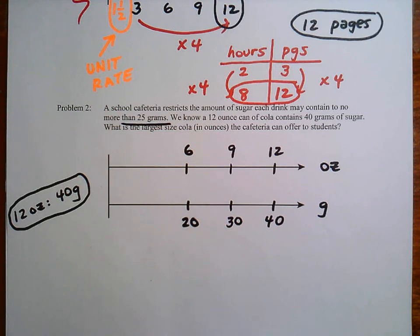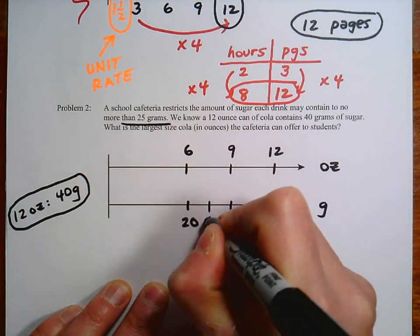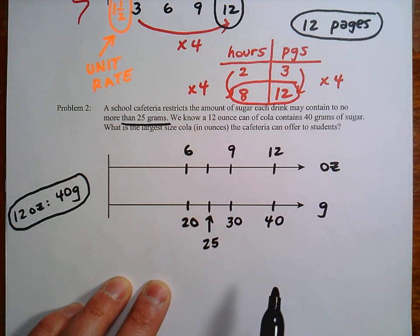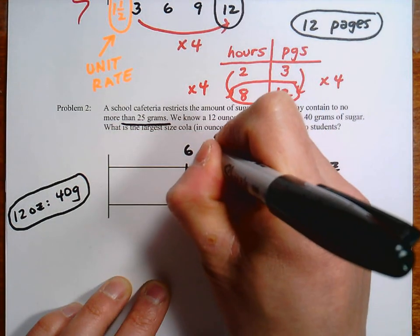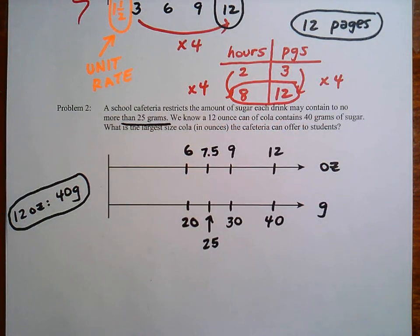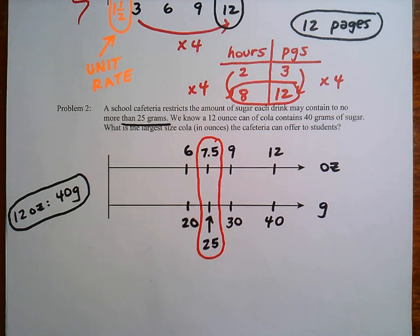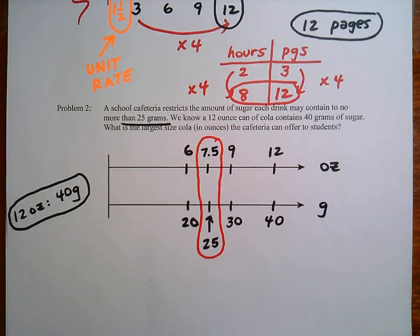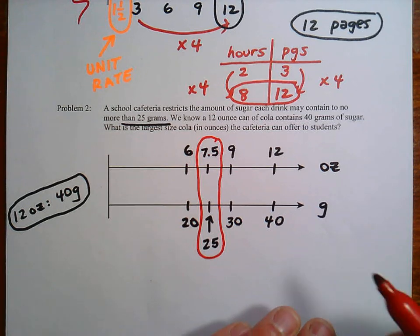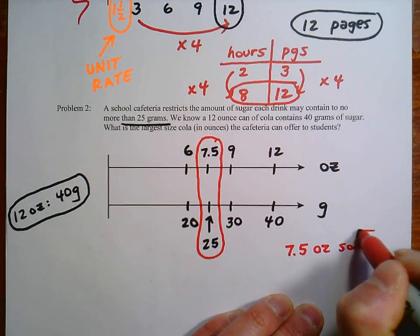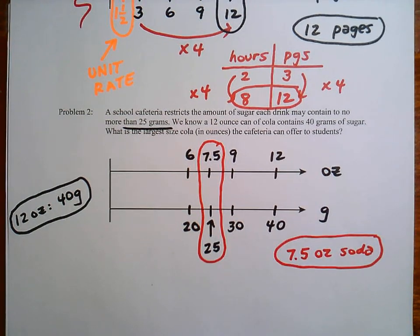But then finally, if we want the answer, we want to go right in the middle here. So that would be 25 grams of sugar. That would put us right in the middle here. So in between 6 and 9, you actually would end up at 7.5 just right there. So just notice how different this is from cross multiplying and you do end up with the answer right here. So a 7.5-ounce cola will give you that 25 grams of sugar maximum.